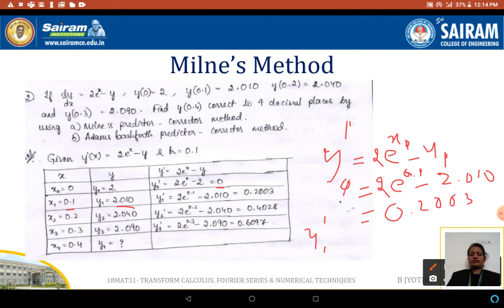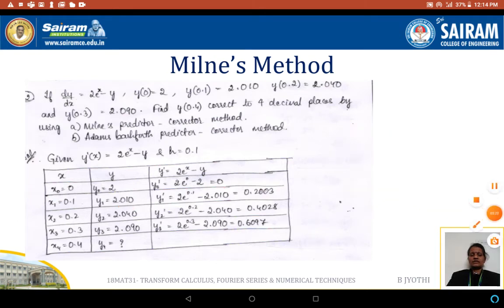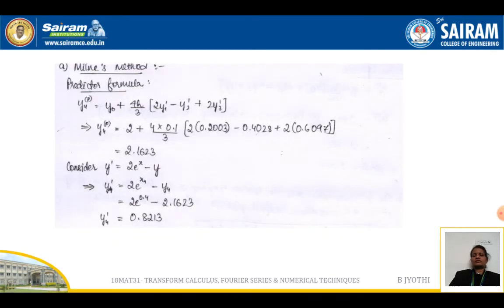Up to y₃ dash only we have to compute; do not compute y₄ dash because we do not have a y₄ value. This y₄ value is computed by using the predictor method.